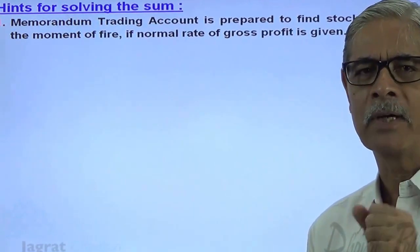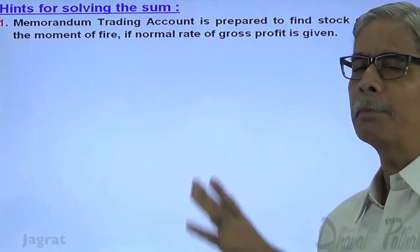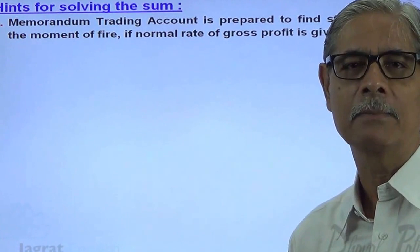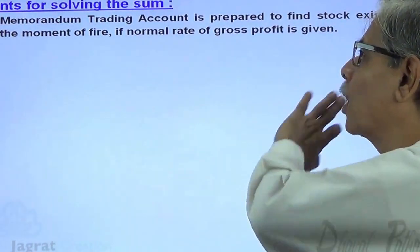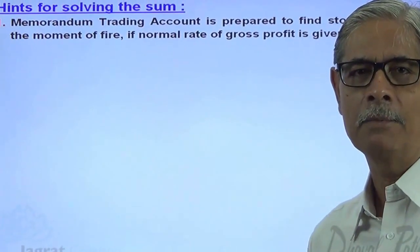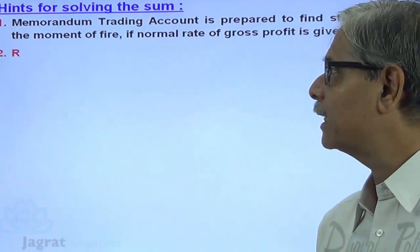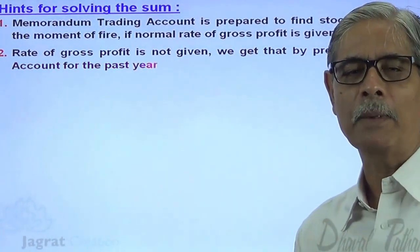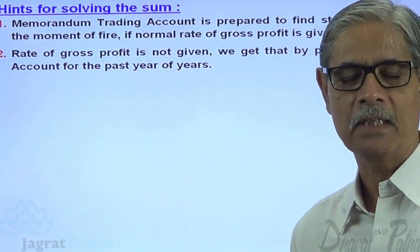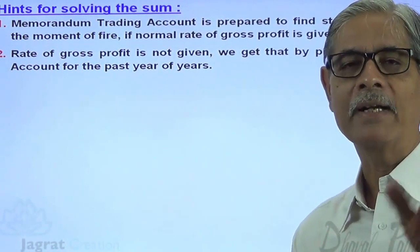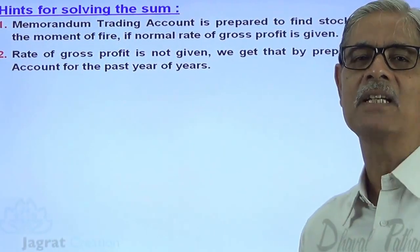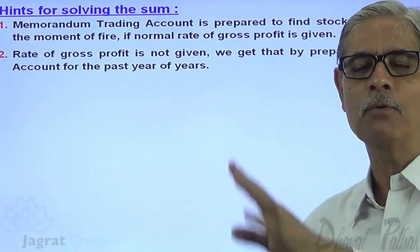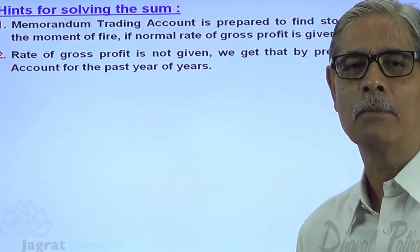The purpose of the memorandum trading account is to find out the stock existed at the moment of fire, on the basis of the normal rate of gross profit. Suppose those details are not available — then you are required to prepare the trading account for past years, find the rate of gross profit for three or four years, find the average, and apply that average to find out the stock at the moment of fire.